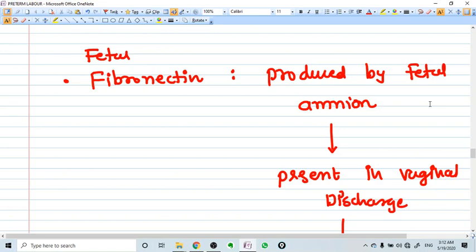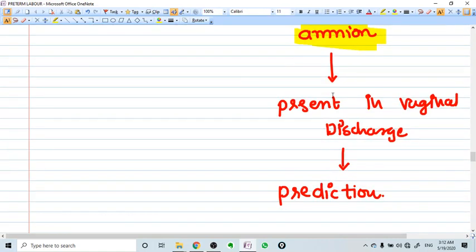Another very important finding or chemical finding is fetal fibronectin present in the vaginal discharge. Fetal fibronectin is produced by fetal amnion, and if we get its presence in vaginal discharge, that means preterm delivery can happen in this case.